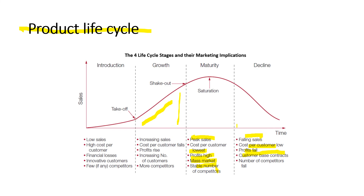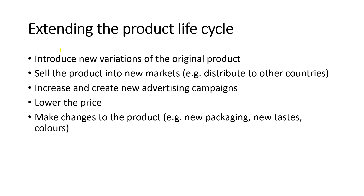To extend the product life cycle, you could introduce new variations of the original product. A lot of businesses create new versions of the same product, or sell the product into a new market — for example, distributing to other countries. When product demand lowers in the UK, businesses may take their product to India, Pakistan, Bangladesh, or wherever they can make money. They can also create new advertising campaigns or bring prices low to clear stock.